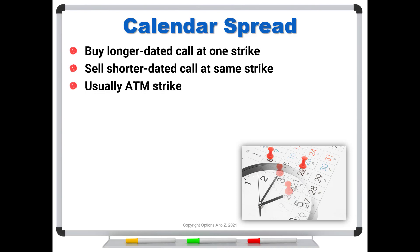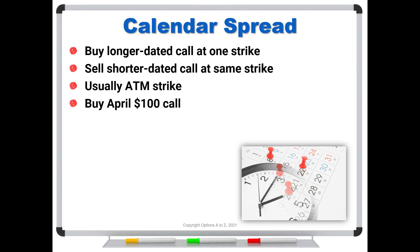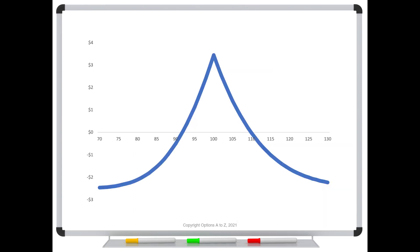For calendar spreads, they are usually the at-the-money strike, but they don't have to be. We can do what's called a bull calendar spread or a bear calendar spread. But normally, if you're just doing a regular calendar spread, it's going to be with the at-the-money strike. As an example, you might buy the April $100 call and sell the January $100 call — different expirations, same strike. Because you're buying the longer dated option, this is called a long calendar spread. It's going to be a debit, and your risk graph will look something like this — notice the peak lines up exactly at the strike, with an upside-down V shape.